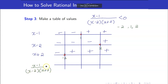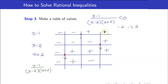Now, for the quotient, we will just count the number of negatives. Since we have 3 negatives in the leftmost interval, the sign of this expression is negative. I have 2 negatives in the next interval, so this is positive. Then 1 negative, so that's negative. And everything in the rightmost interval is positive.